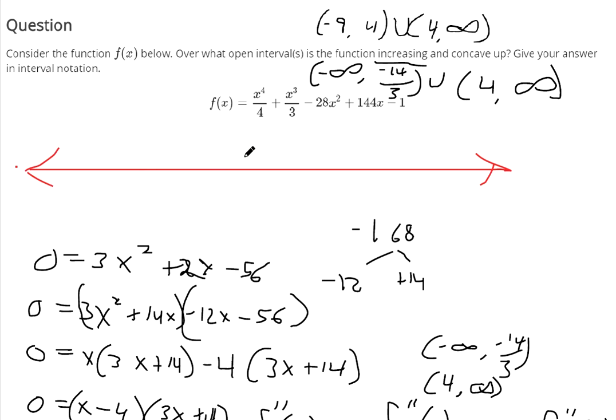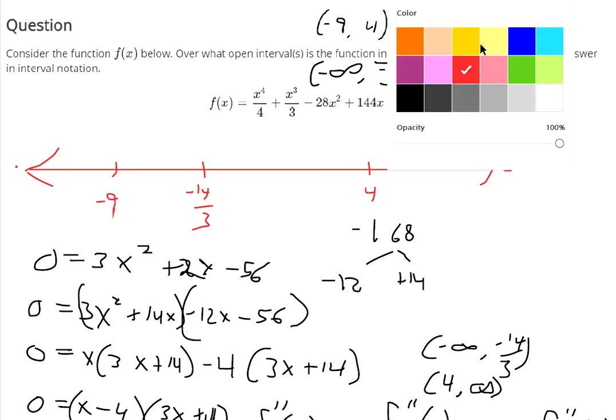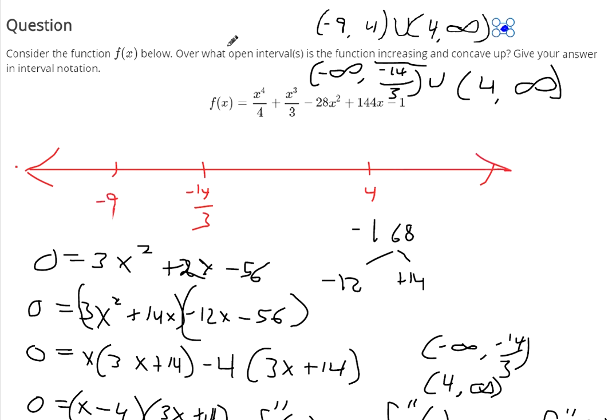So here's x equals 4. Here's negative 14 over 3. Here's negative 9. So in blue, this first interval, it says it's from negative 9 to 4, and then from 4 to positive infinity. We need where they both are happening, where it's concave up and increasing. So I'll draw this in purple. This is negative infinity to negative 14 over 3, and then it's 4 to infinity.